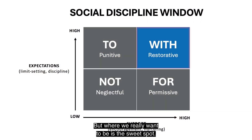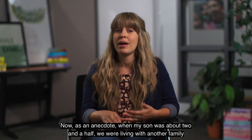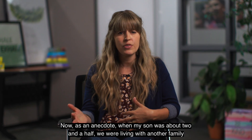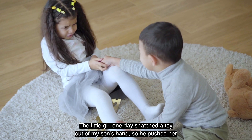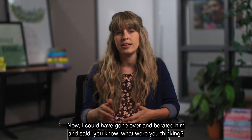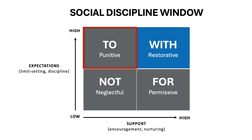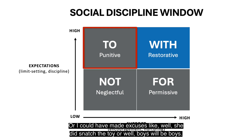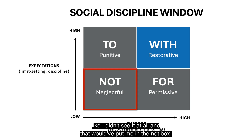Where we really want to be is the sweet spot of high expectations and high support — doing things with others. When my son was about two and a half, a little girl snatched a toy from him, so he pushed her and she fell and began crying. I could have berated him and sent him to timeout — the punitive box. Or I could have made excuses like 'she did snatch the toy' or 'boys will be boys' — the permissive box. Or I could have walked away and pretended I didn't see it — the neglectful box.